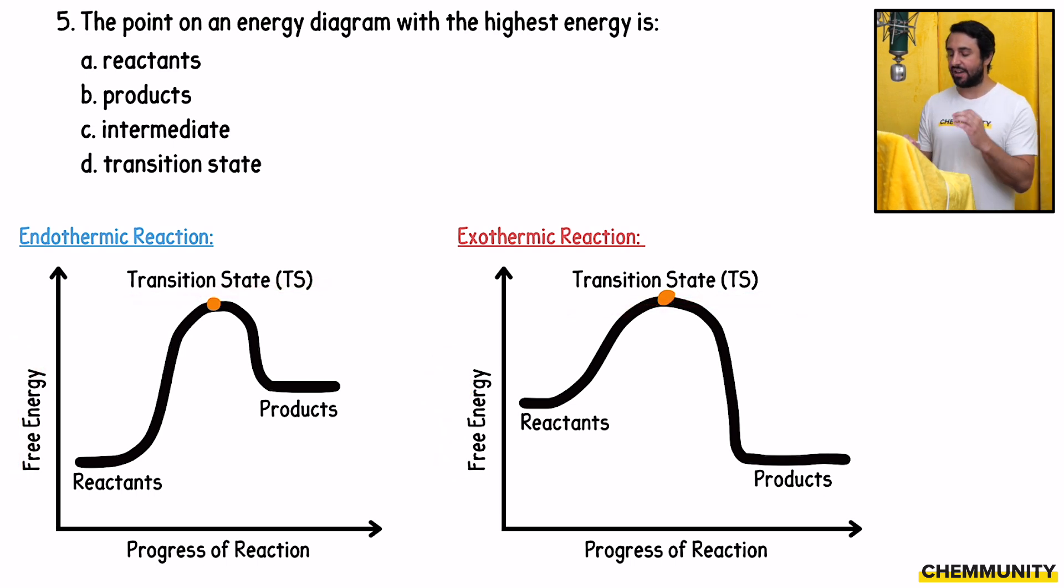So the transition state is the highest energy configuration that has to be reached in order for the reaction to proceed. So the reactants need to collide in a certain configuration with enough energy, called the activation energy, to reach the transition state. That's the highest energy situation.